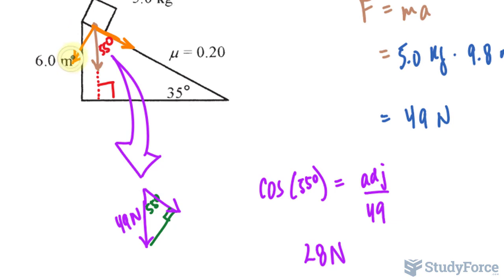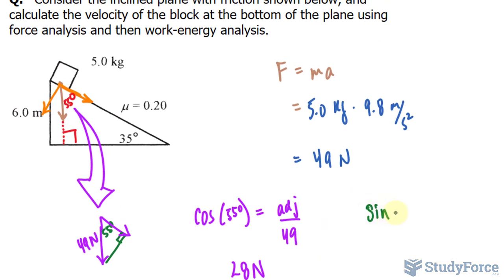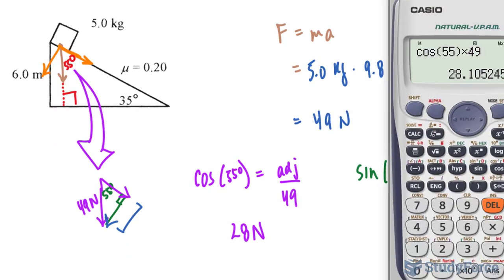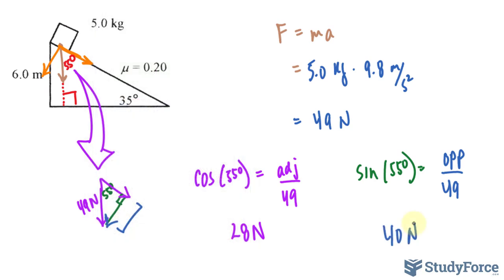We also need to find the magnitude of the perpendicular component. Rather than using cosine, I'll use sine. Sine of 55 degrees relates opposite and hypotenuse, so the opposite is the perpendicular vector and the hypotenuse is 49 newtons. Multiplying sine 55 times 49 gives us 40 newtons perpendicular to the plane.